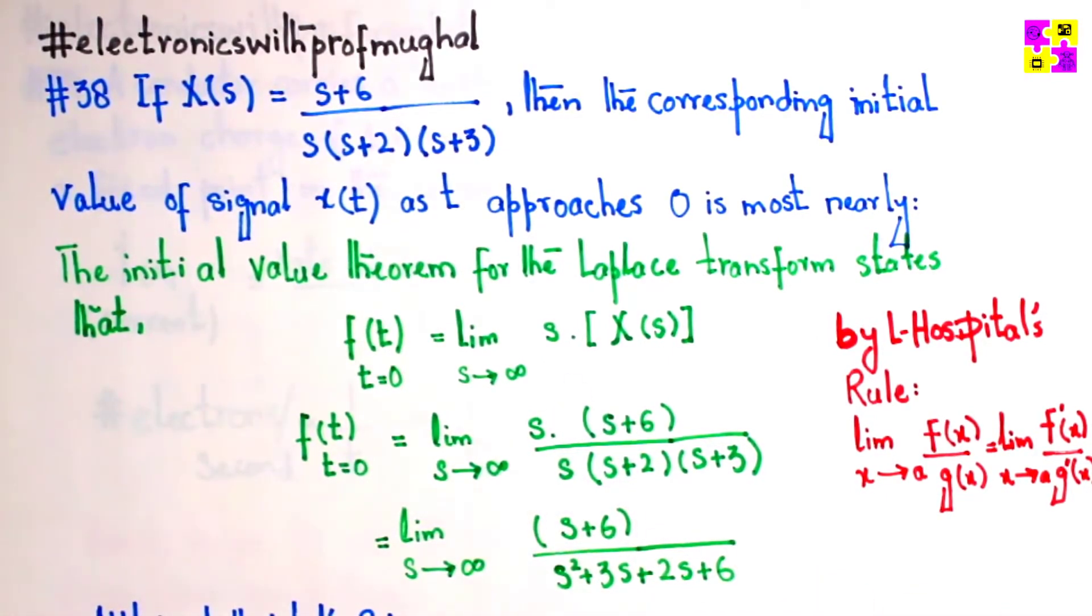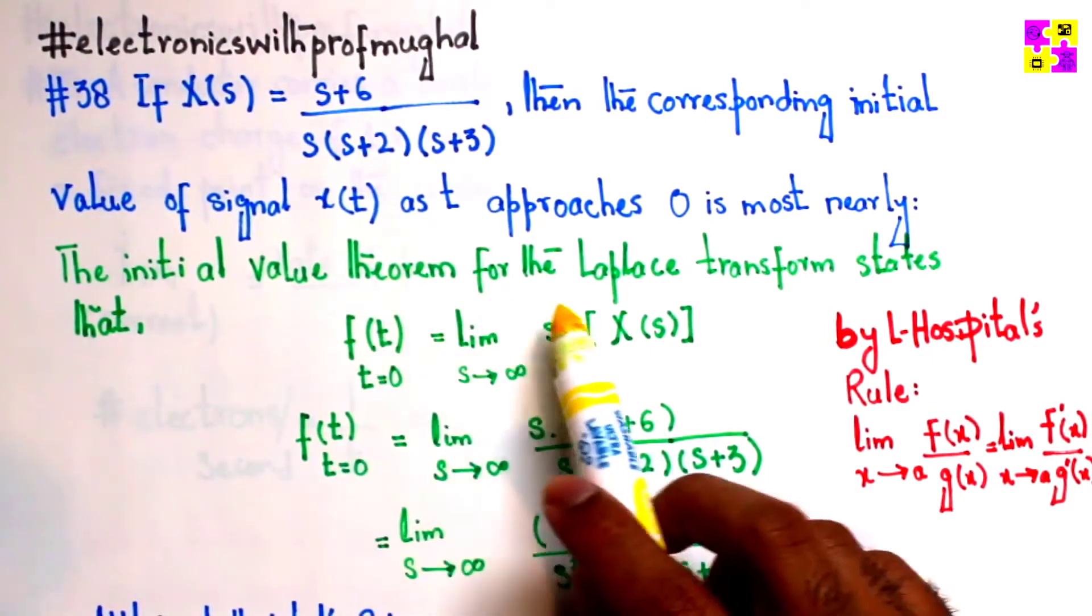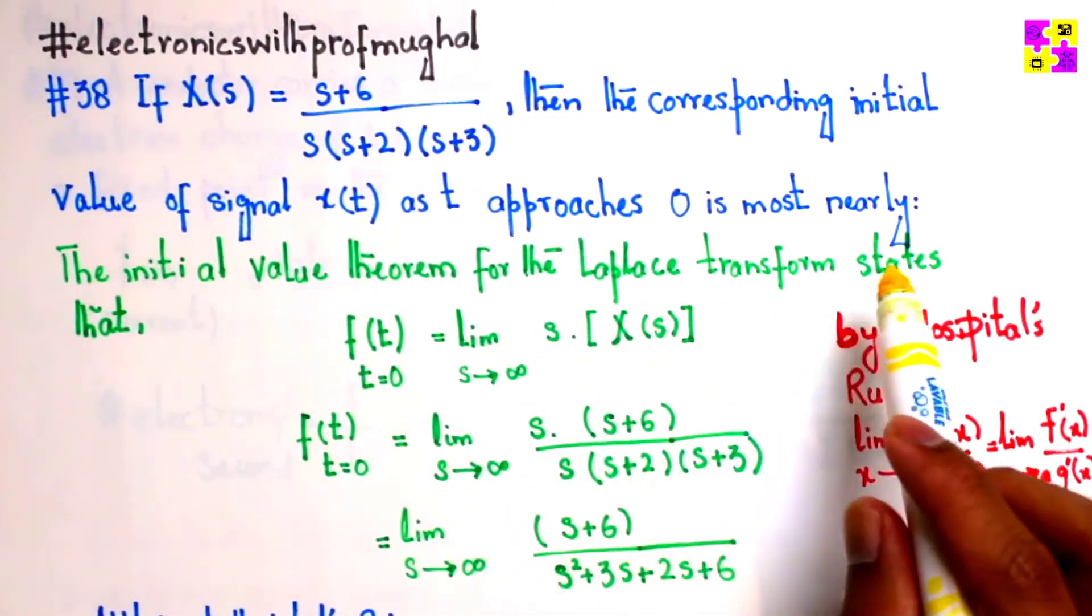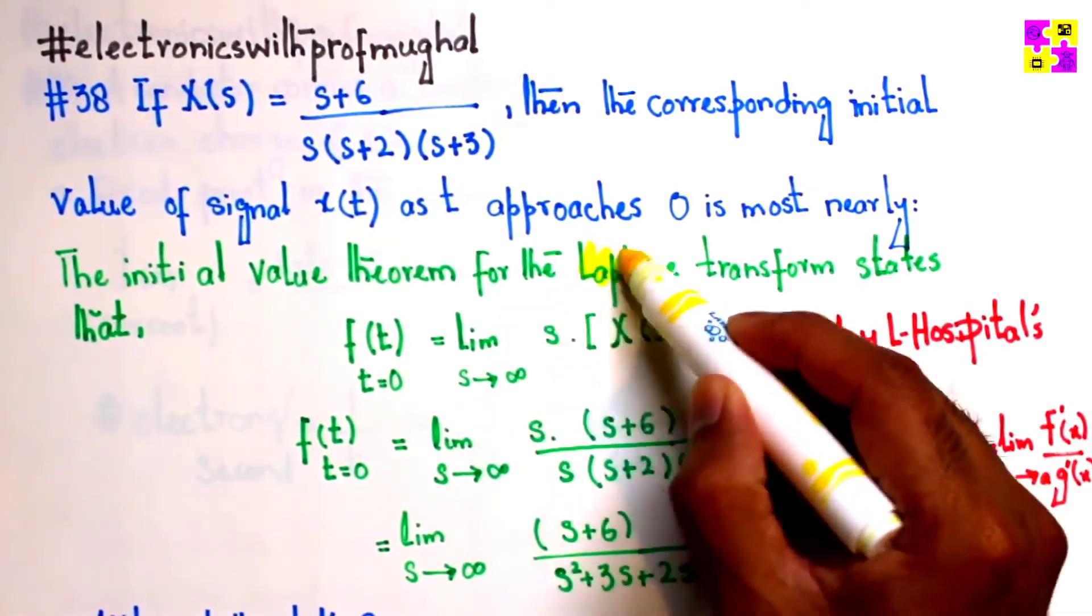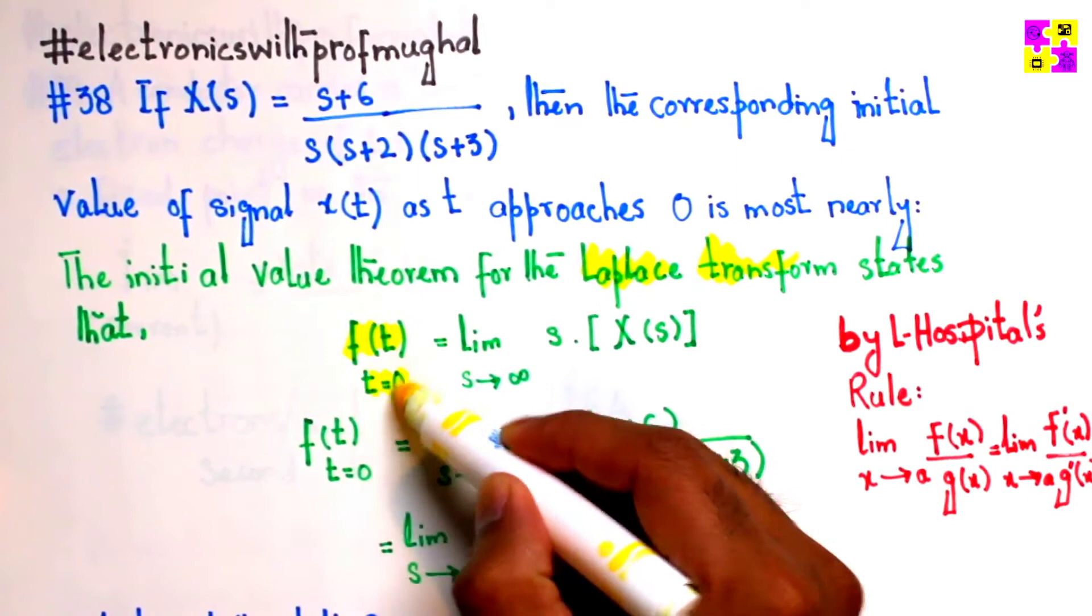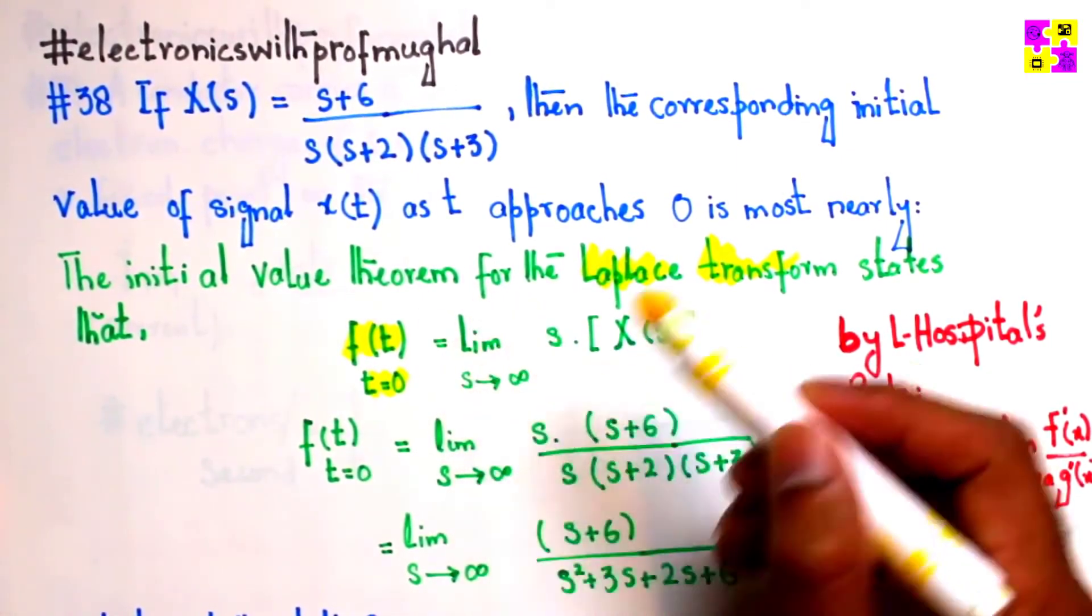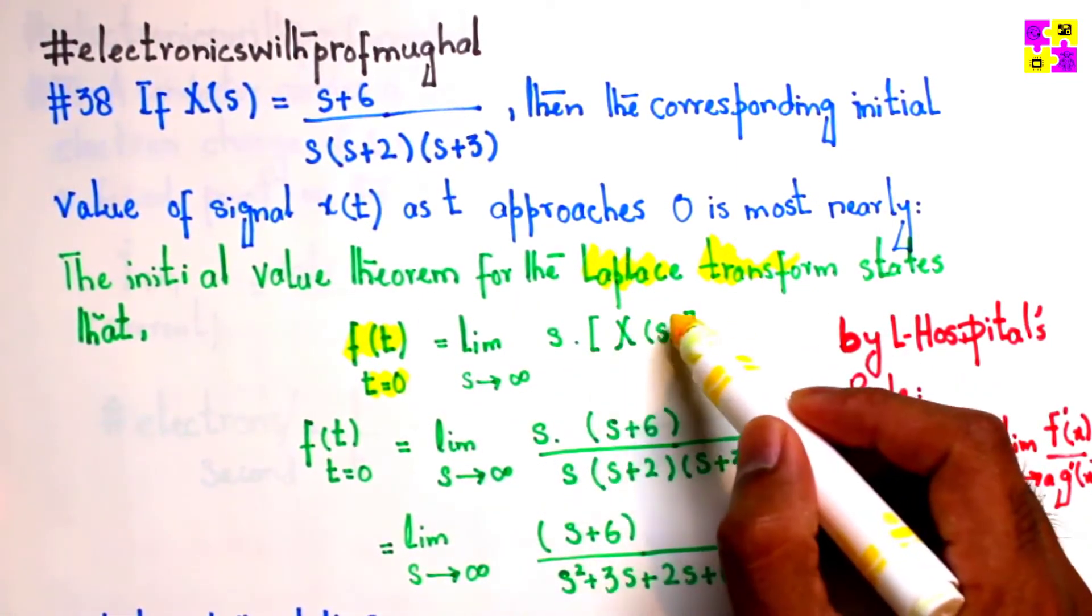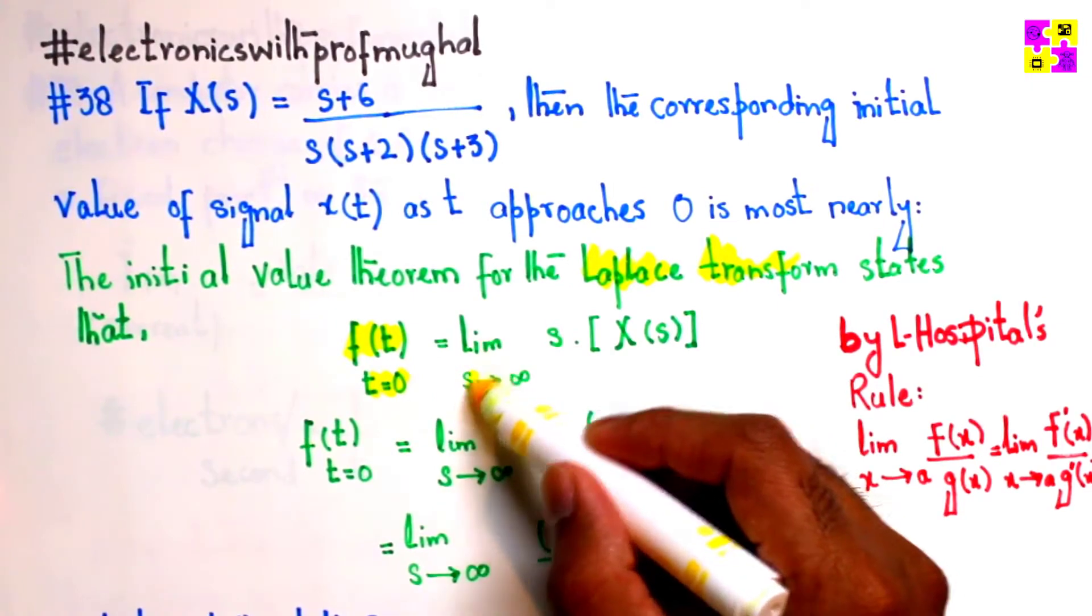Remember, the initial value theorem for the Laplace transform states that f(t) at t equals 0 equals the limit as s tends to infinity of s times X(s).